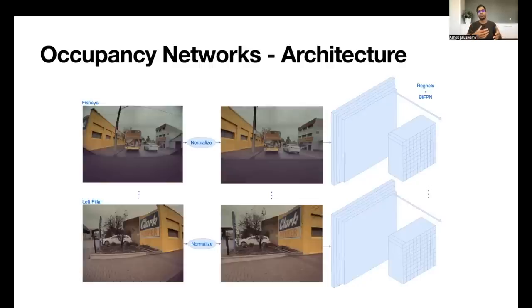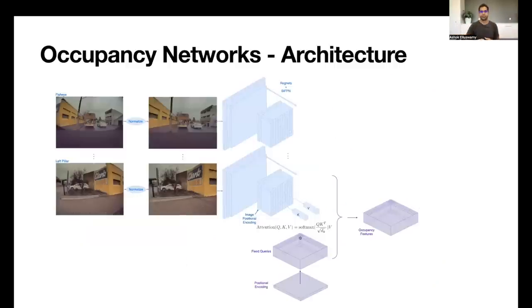These backbones now produce features, the high-dimensional features in the image space. But we want the occupancy to be in 3D, right? How do we get this? We use query-based attention to produce these 3D occupancy features. This is, in fact, similar to how a paper of the same name, occupancy networks, came out a few years ago, which again queries 3D points for whether the 3D point is occupied or not.